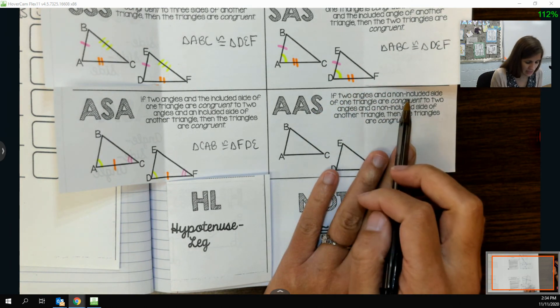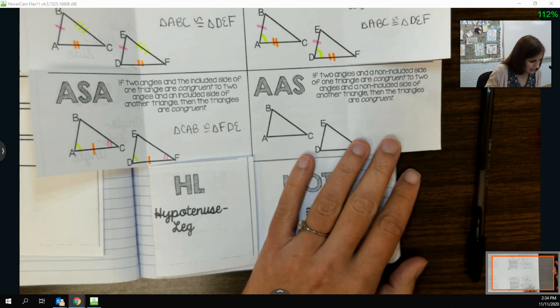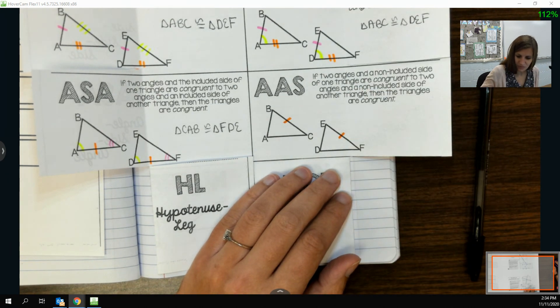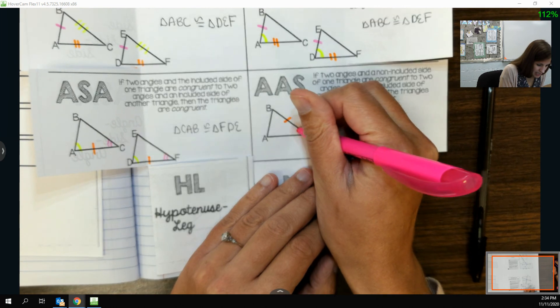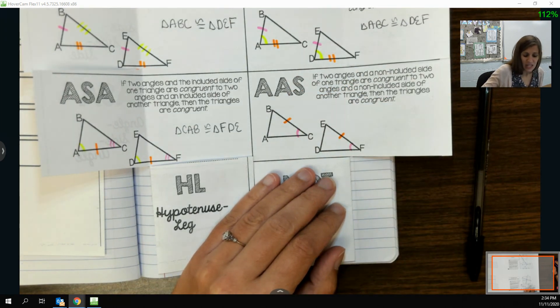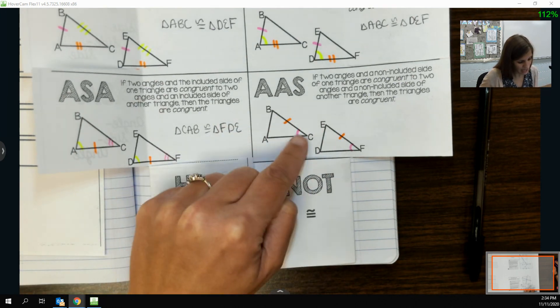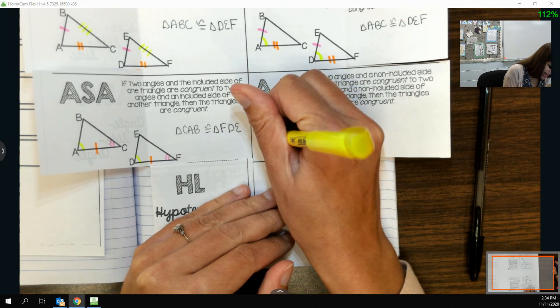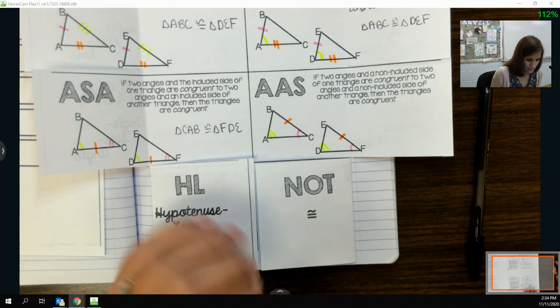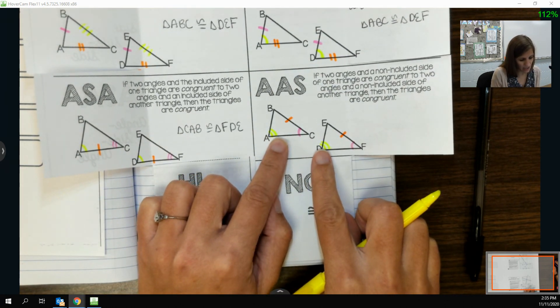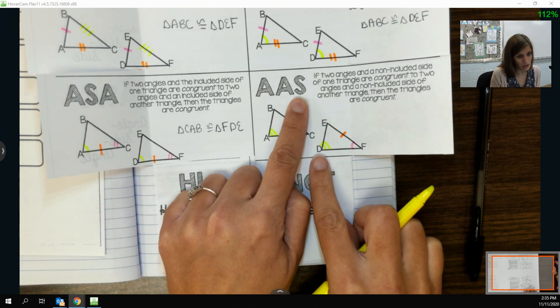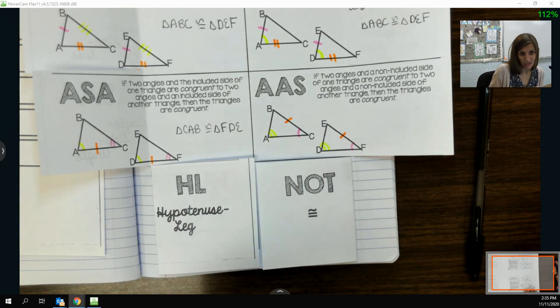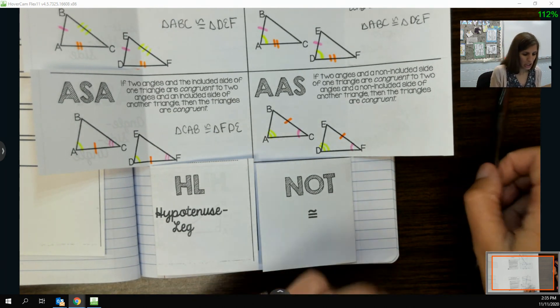If two angles and a non-included side... if I think about my picture here, if I knew that this side, BC, was congruent to EF, and then I had C congruent to F, if I knew that B and E were congruent, I'd be using angle side angle, because that would be around this side. Instead, to use angle angle side, I would actually need to know that A is congruent to D, because the side is not included here. It's kind of like outside of it. I could also use angle angle side if I still knew these two angles, but instead knew that side AB and DE were congruent. So it just has to be the one not in between your two angles.